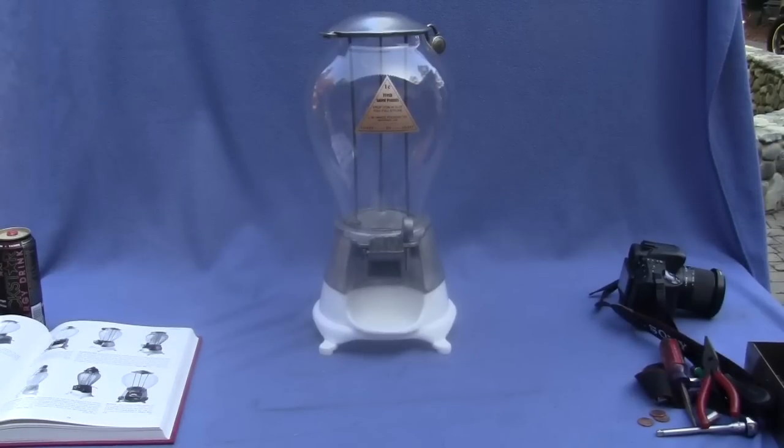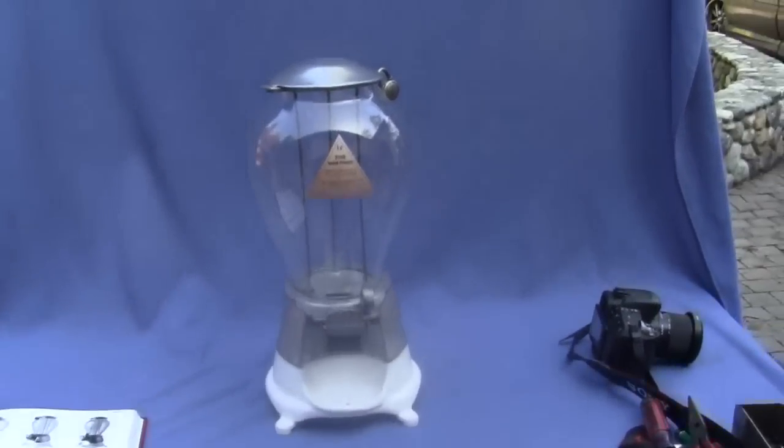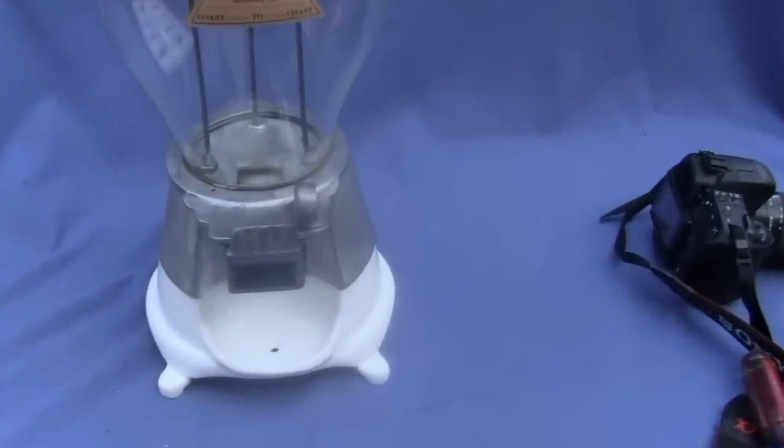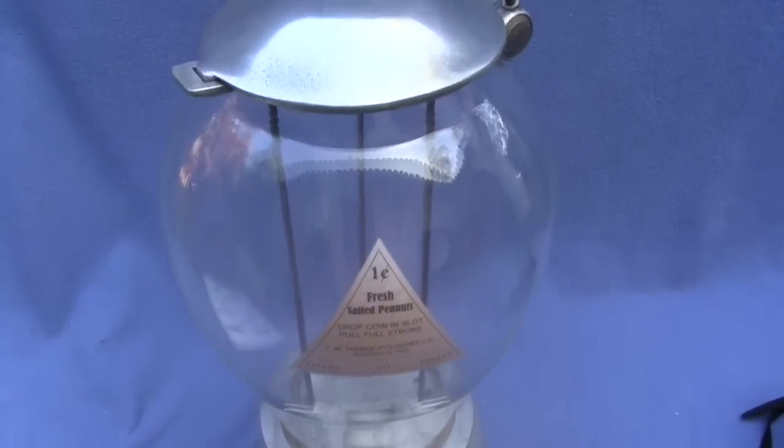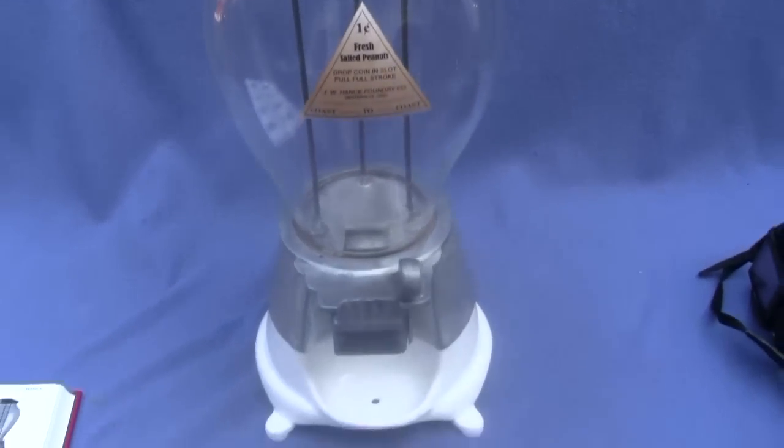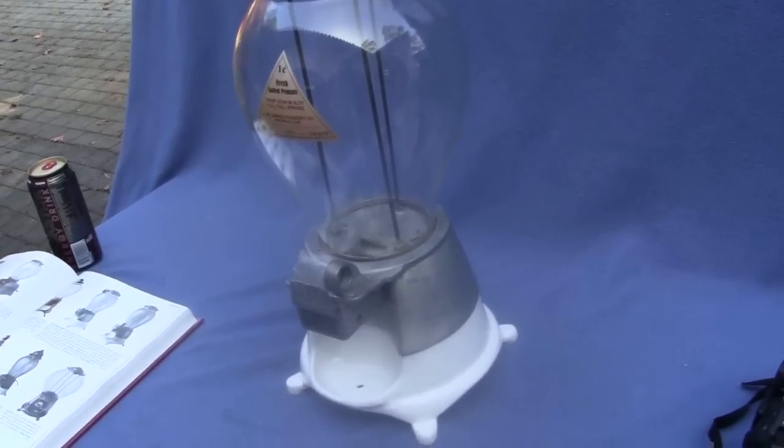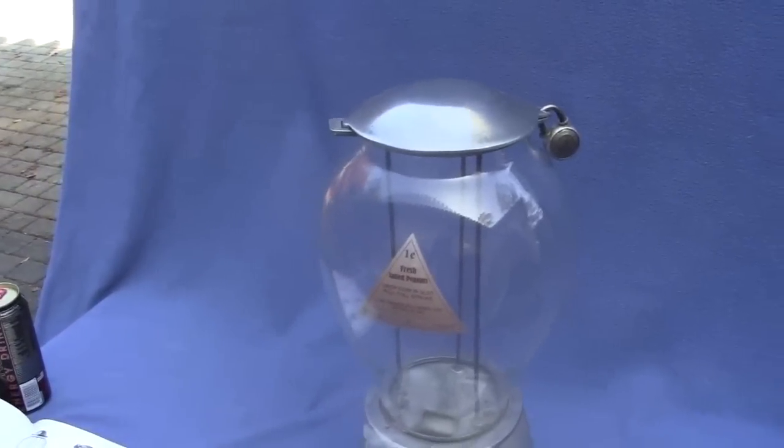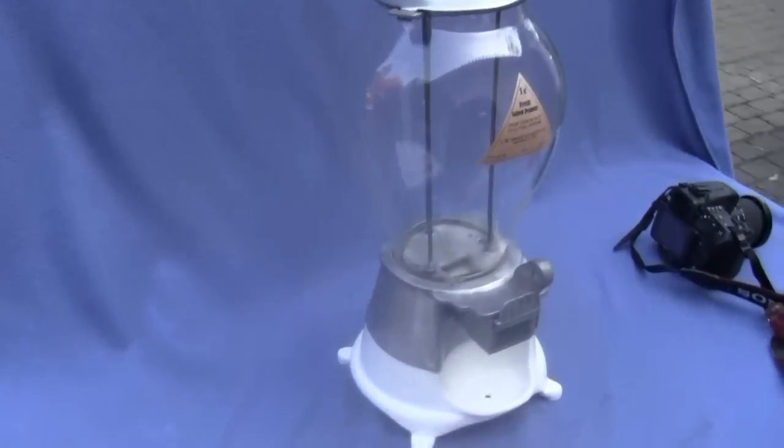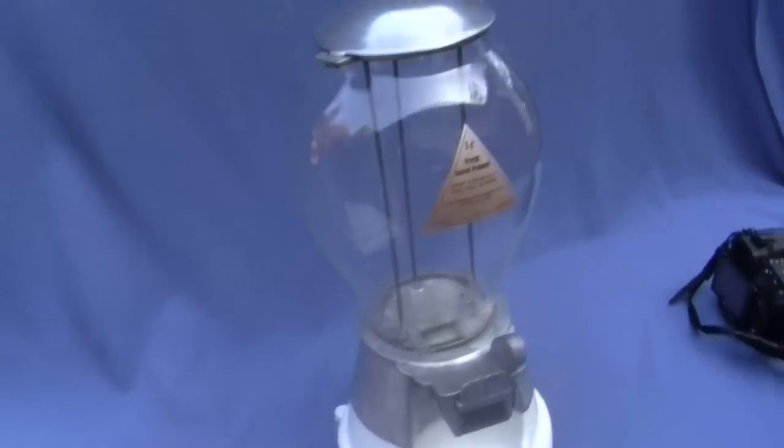Okay, up for auction is a Hans Standard Rex machine. This is a 1 cent peanut vendor or candy vendor or gumball vendor, depending on what you want to call it. Runs on a penny, works beautifully, has top and back lock and key for both locks.